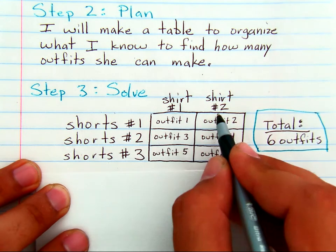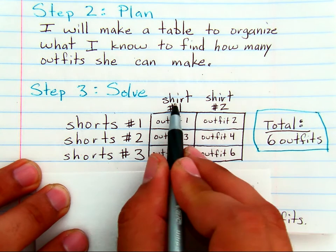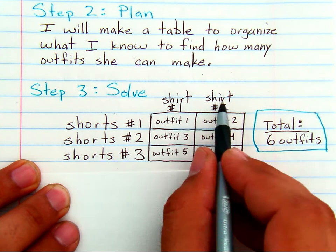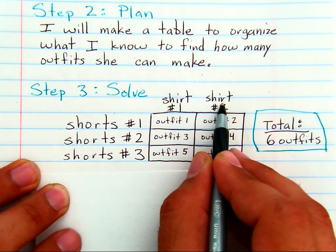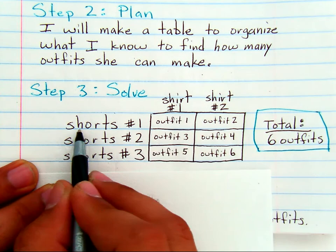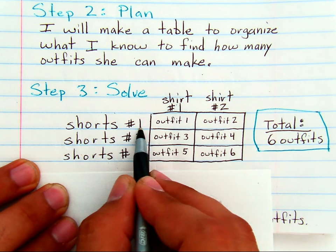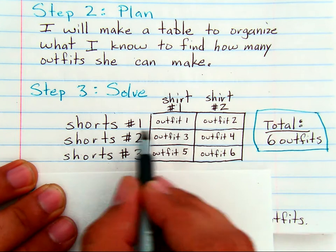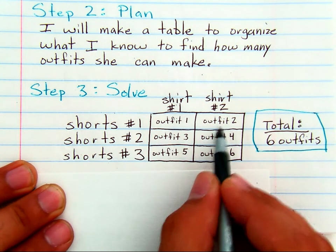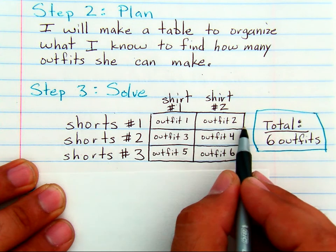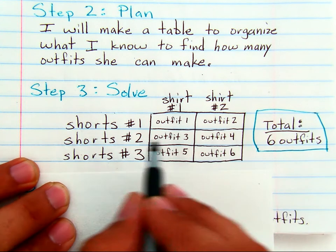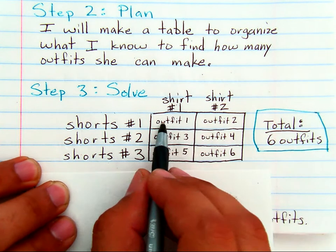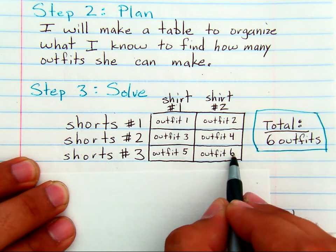And each column is going to be defined by each shirt that she bought. She bought two shirts. So if she bought two shirts, then she can wear shirt number one with shorts number one. That makes one outfit. She can also wear the second shirt with that pair of shorts, and that makes a second outfit. So there's two outfits in that row. And since there are three shorts, three rows, we can see that there are two, four, six outfits.